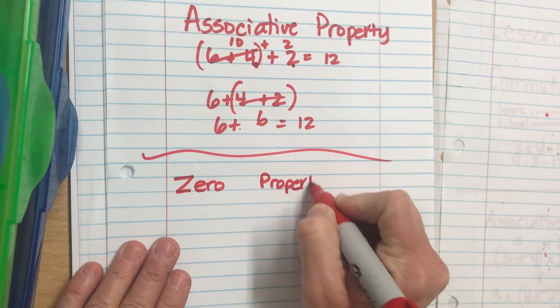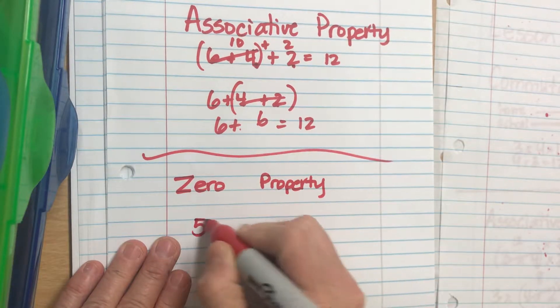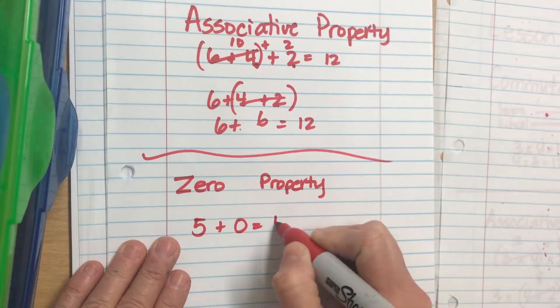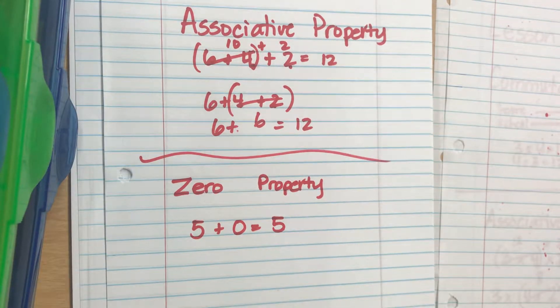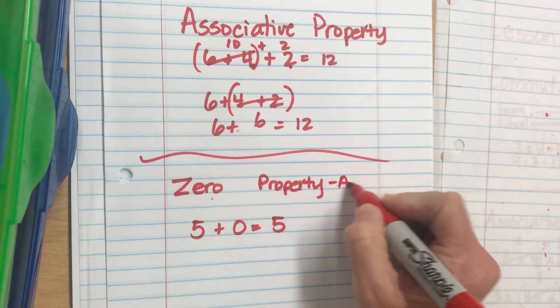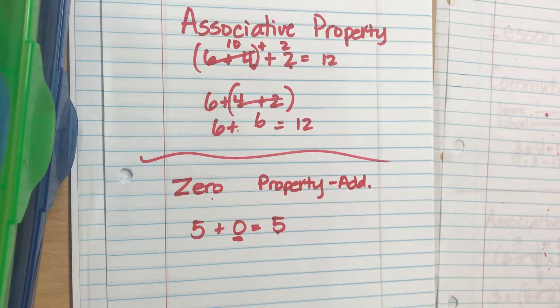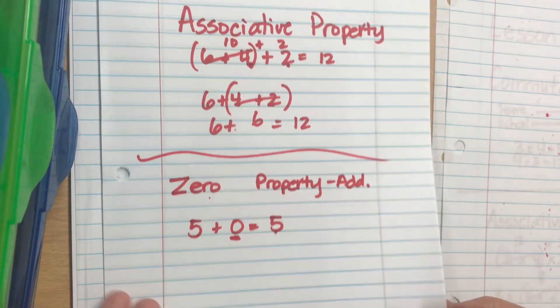Now in multiplication, anything times zero equals zero. In addition, anything plus zero equals itself. It's kind of like the one's rule in multiplication - anything times one is still itself. In the zero property of addition, anything plus zero is still itself. So let's take a look at our sheet here.